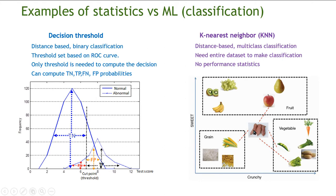I made the decision based on two features — sweet and crunchy — while in the decision threshold I used one feature. K-nearest neighbors is distance-based: I look at close-by instances, but I need the entire data set for each new determination, whereas with decision threshold I only need the single threshold. The decision threshold provides performance statistics — true negative, true positive, false negative, false positive — while k-nearest neighbors does not have a simple way of getting performance statistics and requires a computer to implement since every decision requires scanning the full data set.